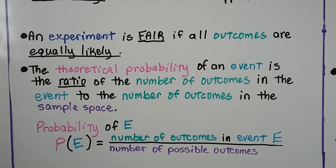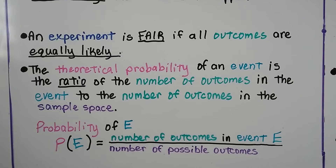An experiment is fair if all outcomes are equally likely. So if we were picking cards from a deck trying to get an ace of hearts, and the person doing the experiment took the ace of hearts out of the deck, that wouldn't be fair because you wouldn't be able to pick it. The theoretical probability of an event is the ratio of the number of outcomes in the event to the number of outcomes in the sample space.